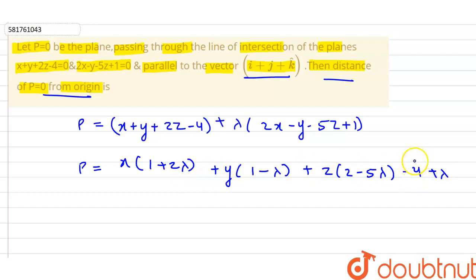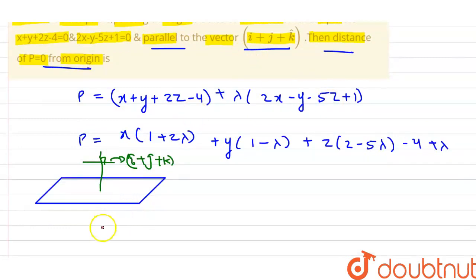The required plane equation is parallel to a vector. We have a line which is i cap plus j cap plus k cap. If this is parallel then the plane's normal will be perpendicular to the plane.